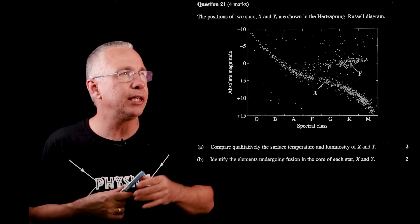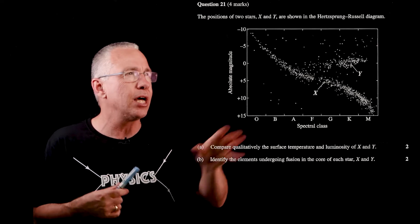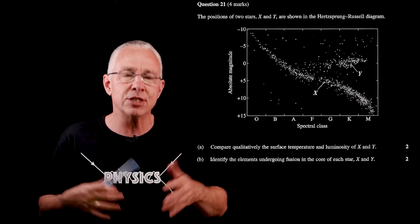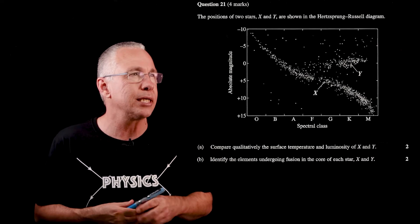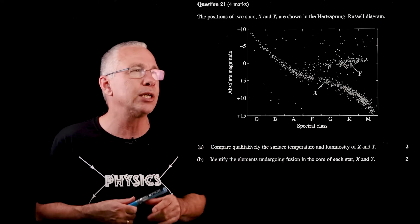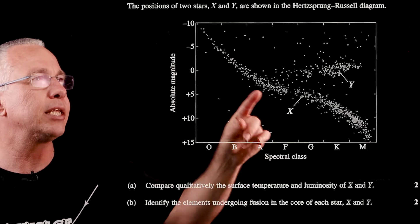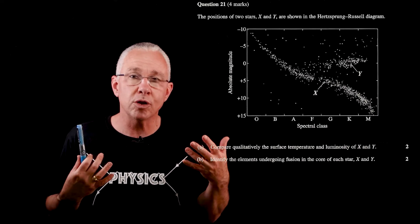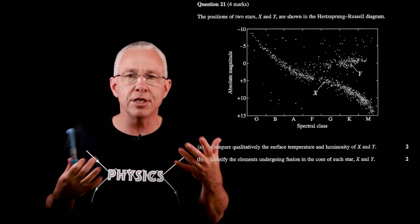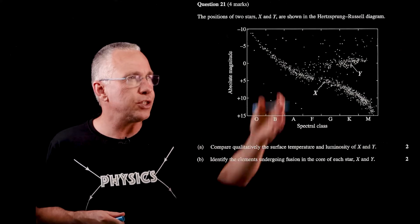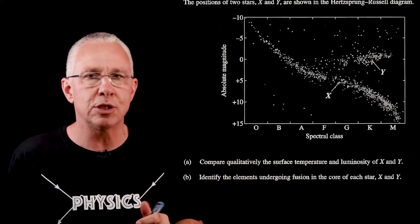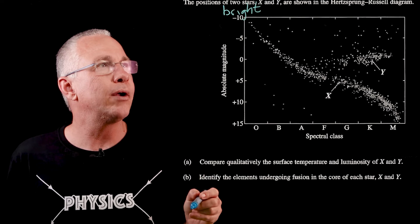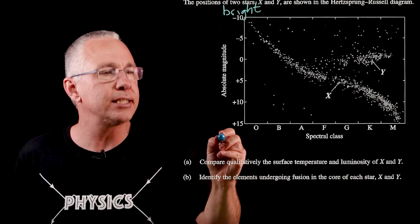Our first short answer question deals with Module 8. We have an HR diagram, which is a graph that represents the magnitude or brightness of a star against its temperature or spectral class. We're given two stars, X and Y — one on the main sequence and the other in what we'd call the giant section. The first question asks us to compare qualitatively their surface temperature and their luminosity.